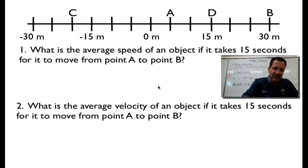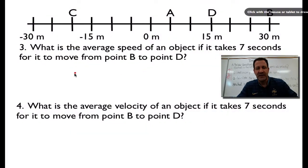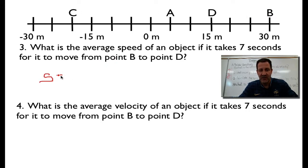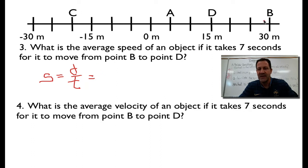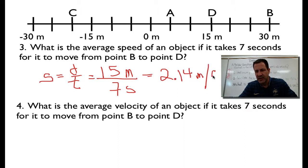Let's look at a slightly more complicated problem. It asks for the average speed, so write down the equation: distance divided by time. The object went from B to D — counting 5, 10, 15 — that is 15 meters. It took 7 seconds. So 15 divided by 7 gives us 2.14 meters per second. That's the speed.